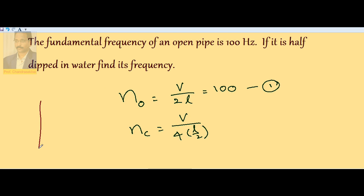The initial pipe is open pipe L length. Once we say it is half dipped in water, so now pipe length becomes L by 2.